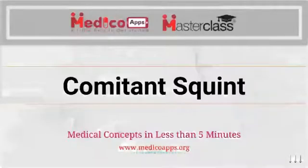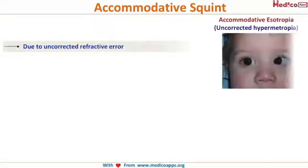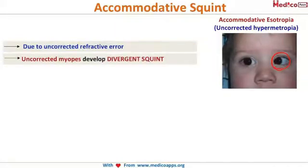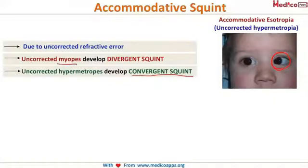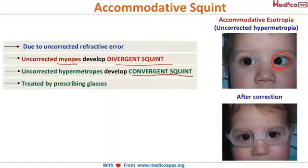Accommodative squint occurs when there is an uncorrected refractive error. Children are usually hypermetropic, and when highly hypermetropic, the eye over-accommodates to improve visual quality, causing it to deviate inwards — this is called accommodative esotropia. Most hypermetropes develop convergent squint and myopes develop divergent squint if uncorrected. The beauty of accommodative squint is that prescribing appropriate glasses corrects both the vision and the eye position.